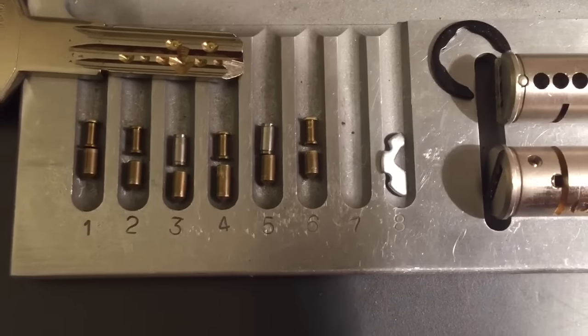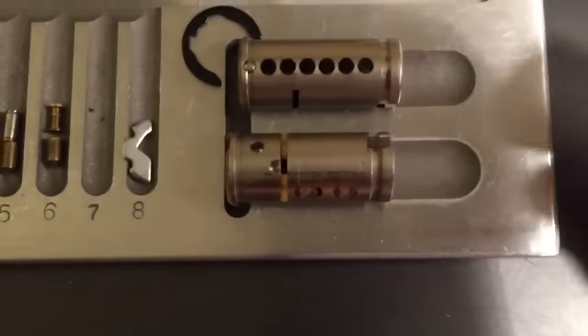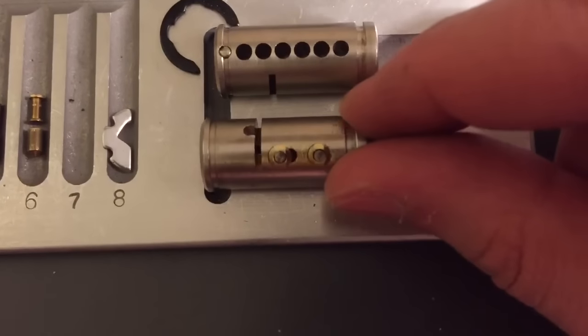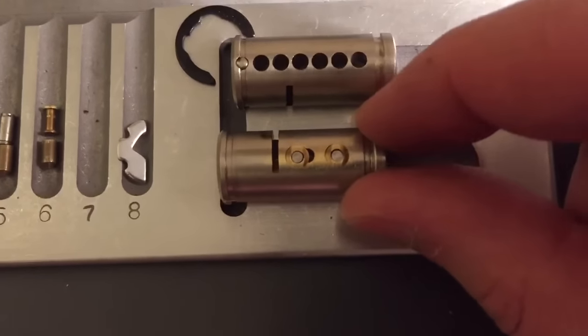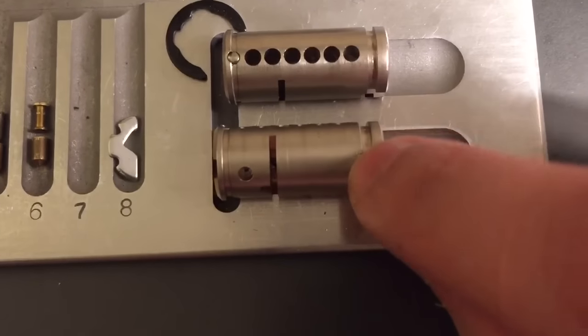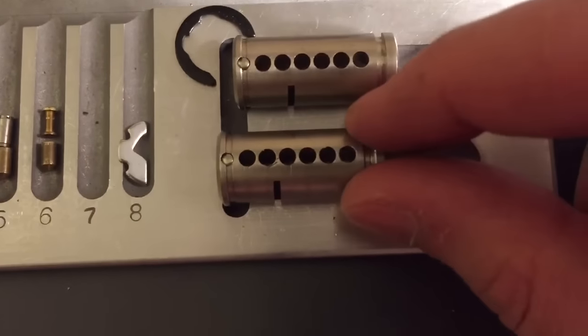In slot eight, we have an anti-drill plate. And then we can see in the bottom of our core, we have the two passive but spring-loaded pins. And some drill protection up top.